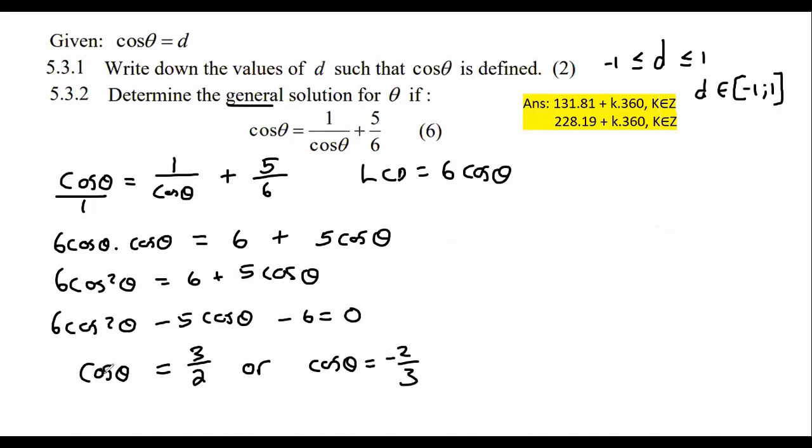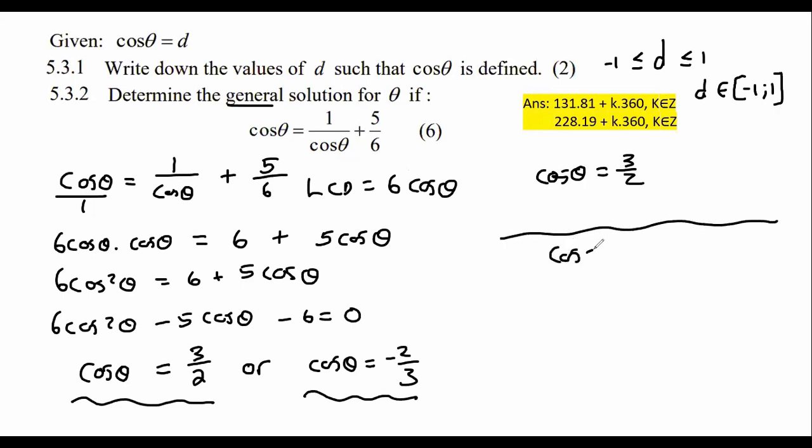But what we're going to get is you're going to plug that all into your calculator and you're going to get an answer of cos theta equals, let me just check what the answers actually are, 3 over 2 or cos theta is negative two thirds. Now, these two equations are going to become brand new questions.